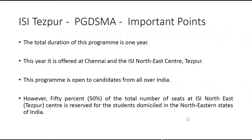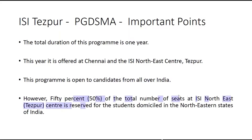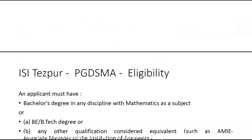The total duration of this program is one year, rather than the usual two-year master's program, because this is a postgraduate diploma. This year it is offered at Chennai and at ISI Tezpur, and is open for candidates from all over India. However, 50% of the seats at ISI Tezpur are reserved for students from northeastern states only. It's a very good program and you should definitely give it a try.